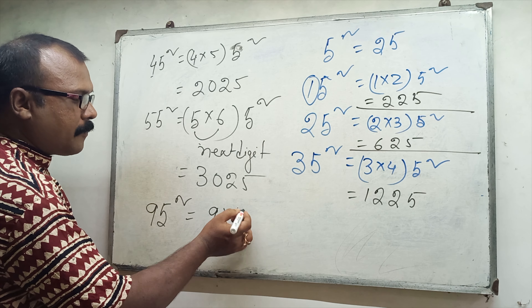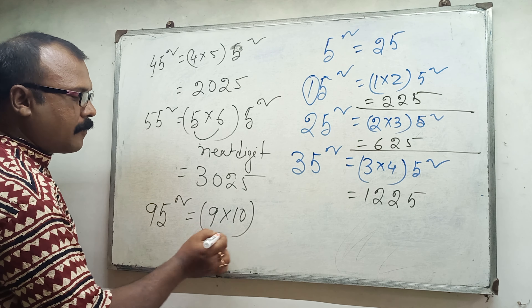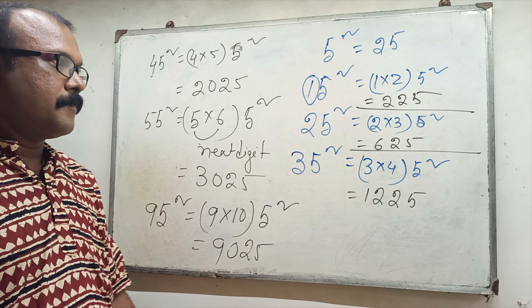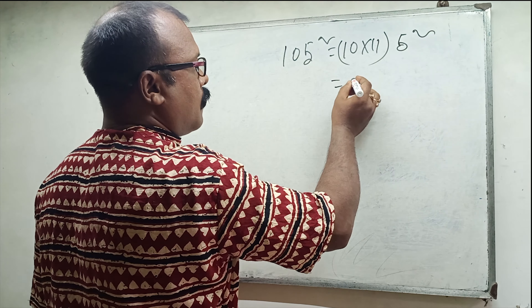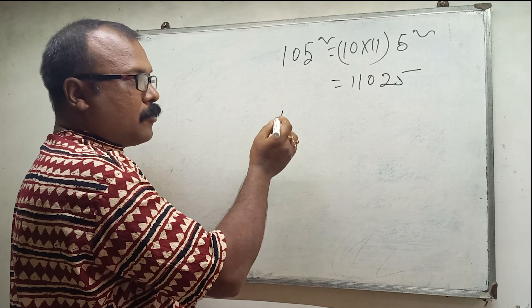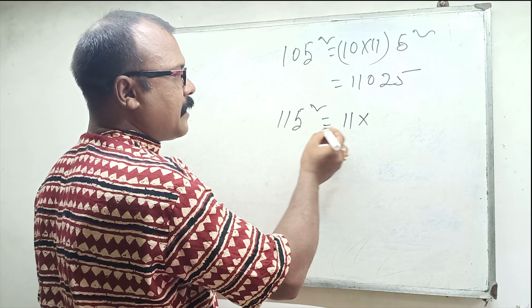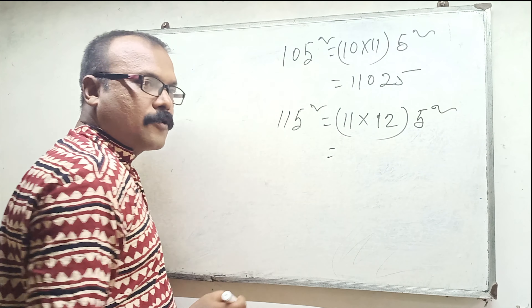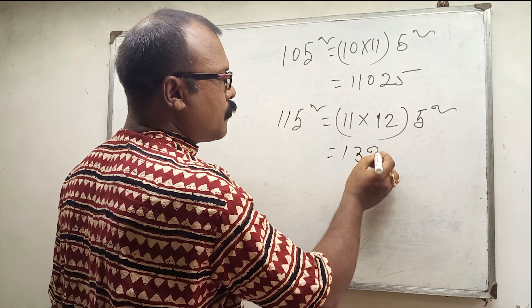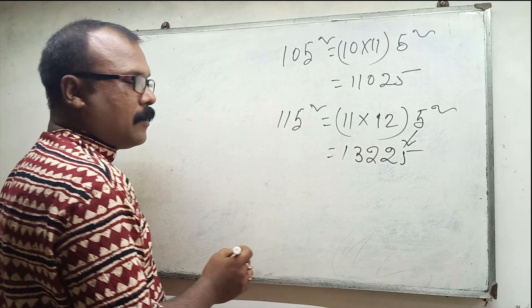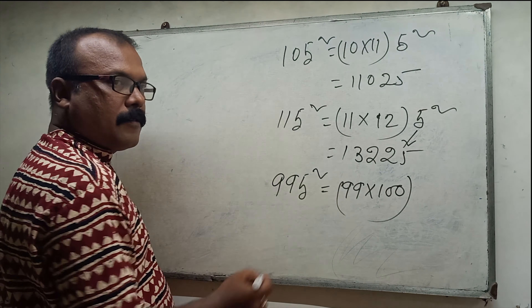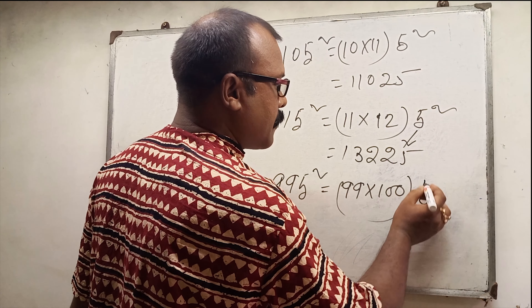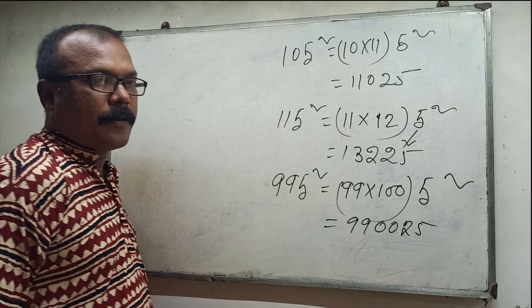So 95 squared: 9 into 10, and 5 squared. So 9025. And 105 squared: 10 into 11, so 11 — and 25. So 11025. Then 995 squared: 99 into 100, so 99 into 100 is 9900, and 25 — so 990025.